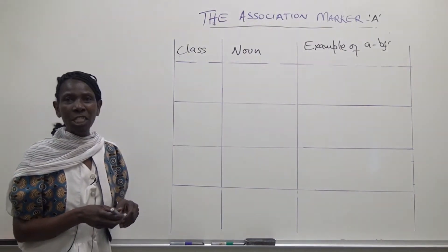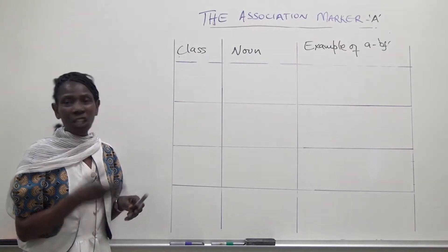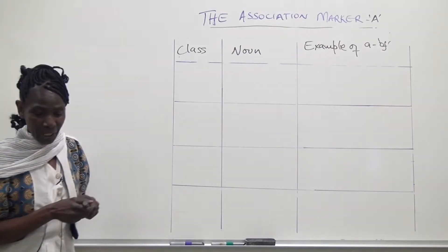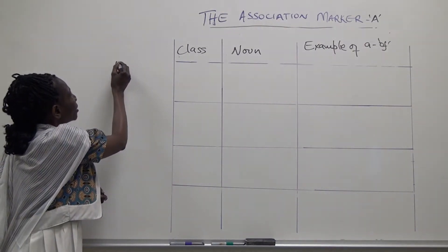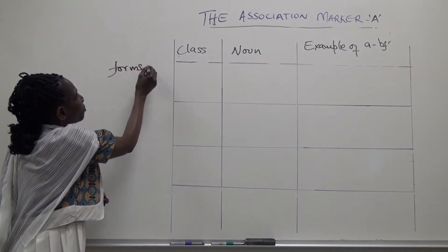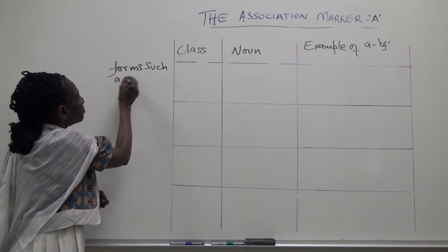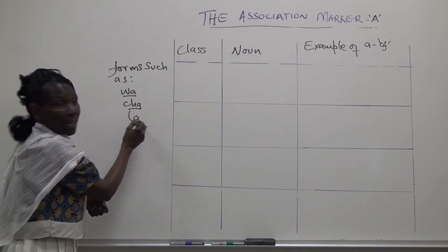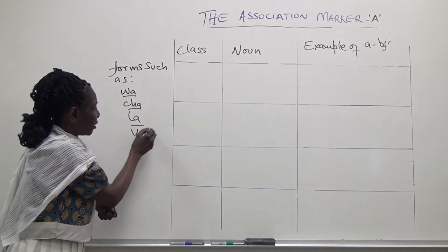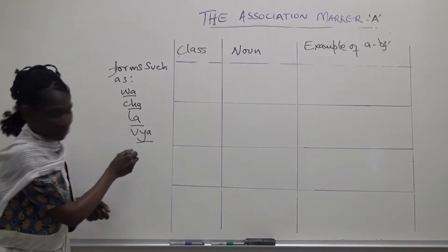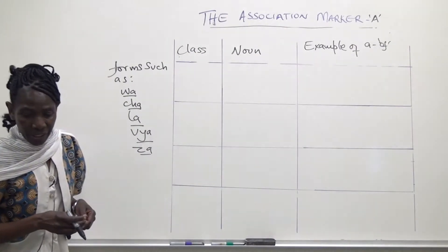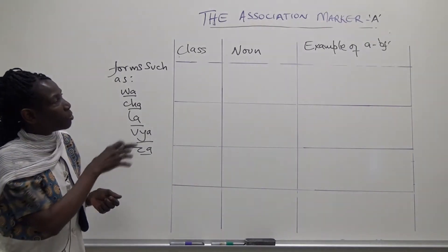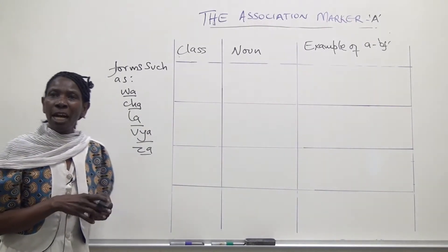We are going to discuss the association marker 'a', which is translated into English as 'of'. In Swahili, the forms such as wa, cha, la, via, za, etc., are all words that in English would be translated as 'of', depending on the noun class that they modify.